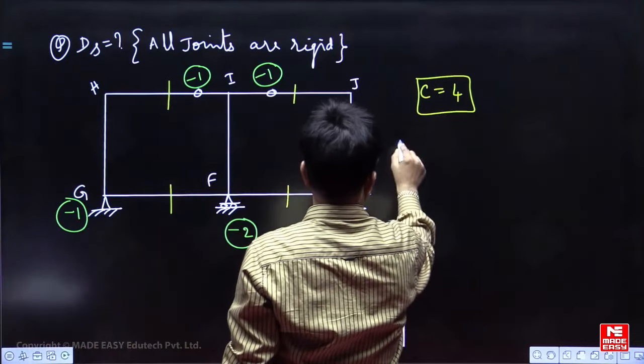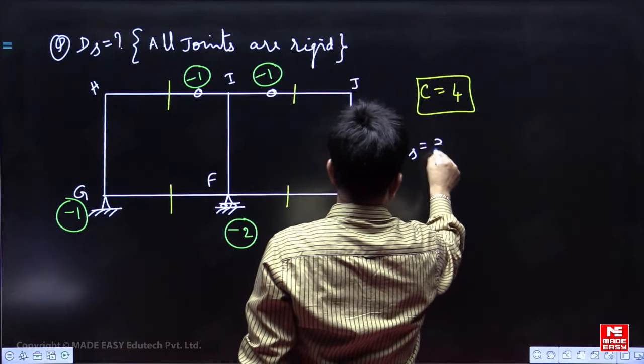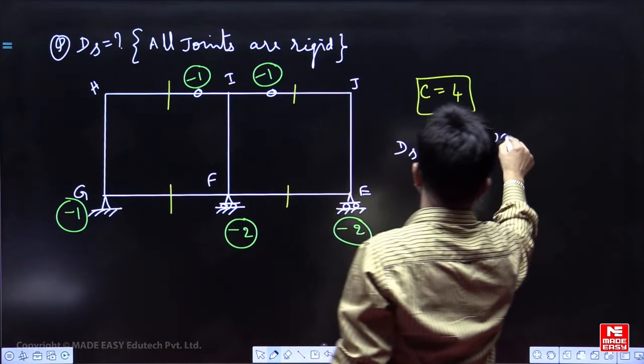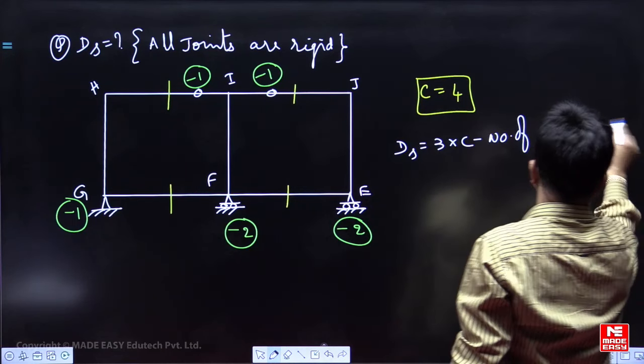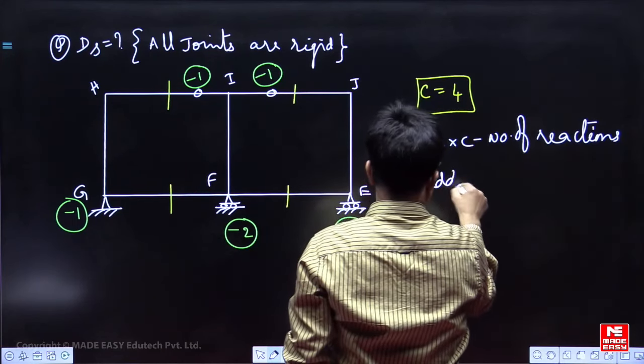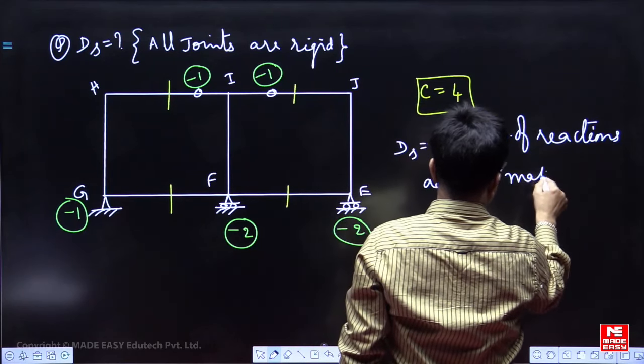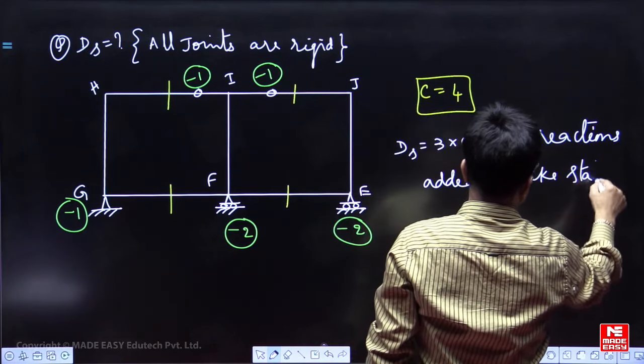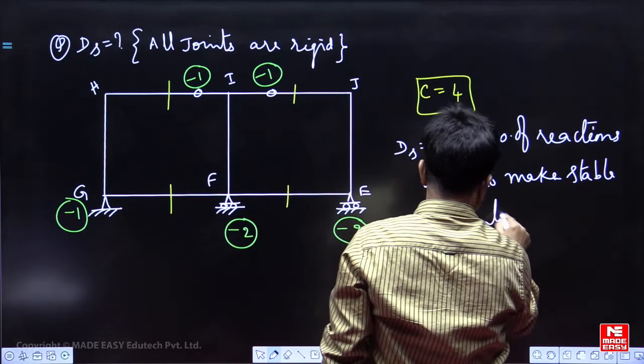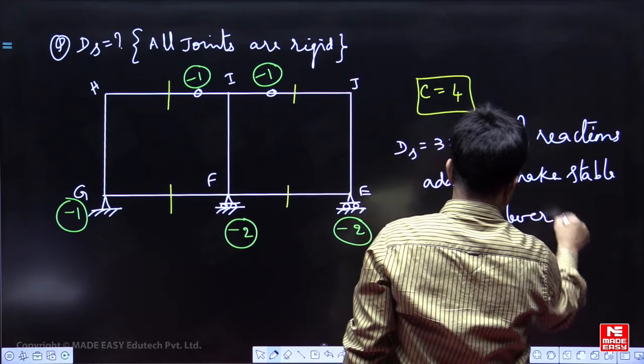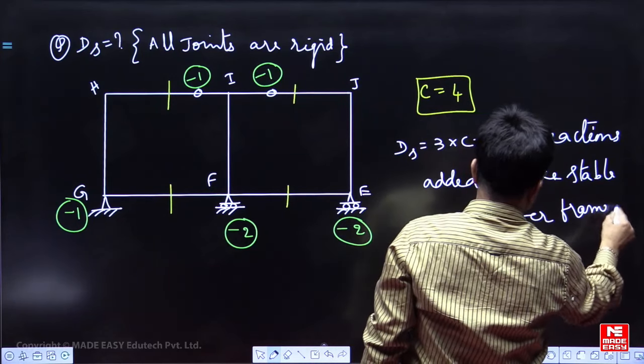DS, static indeterminacy, is 3 times number of cuts minus number of reactions added to make stable cantilevers, to make stable cantilever frames.